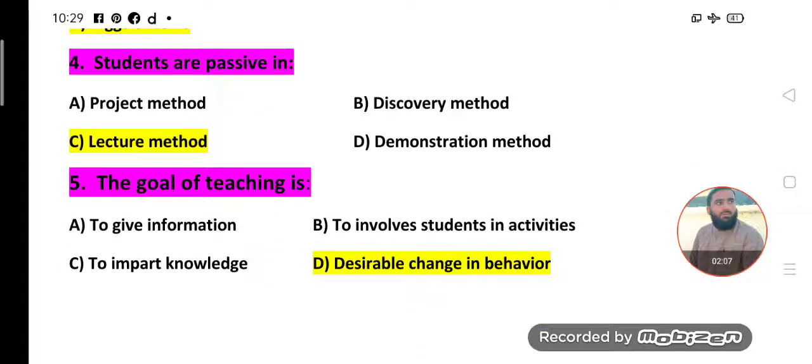MCQs number four. Students are passive in which method? Project method, Discovery method, Lecture method. Yes, Lecture method is the correct option. Option C is correct - students are often passive in lecture method while teacher is active.